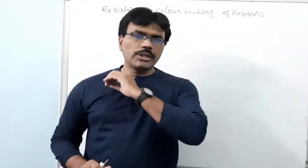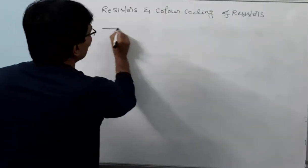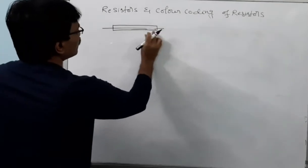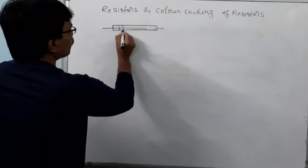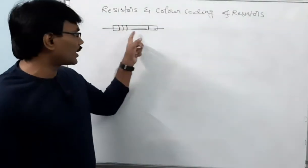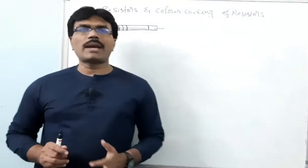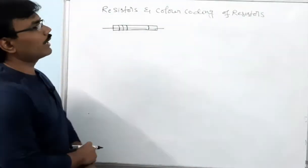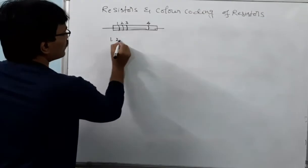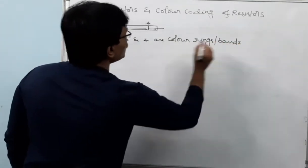Whatever coding we follow is followed universally — the same color coding is used everywhere. If you take a carbon resistor it will be like a thin rod, and over that rod there will be colored rings or color bands printed on it. Resistors can be four-band or five-band, depending on the number of colored rings. We are focusing on four-band resistors, since most examination questions use four-band color coding. A four-band resistor has four colored rings: first, second, third, and fourth.